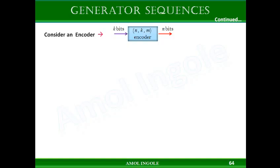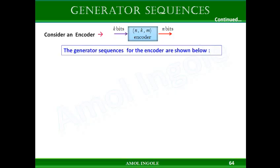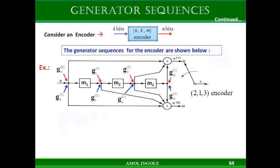Let us consider an encoder having k-bit input and n-bit output. We will consider one example of a convolution encoder. If you see this convolution encoder, you will find that there are two outputs for this encoder and there are three memory units.